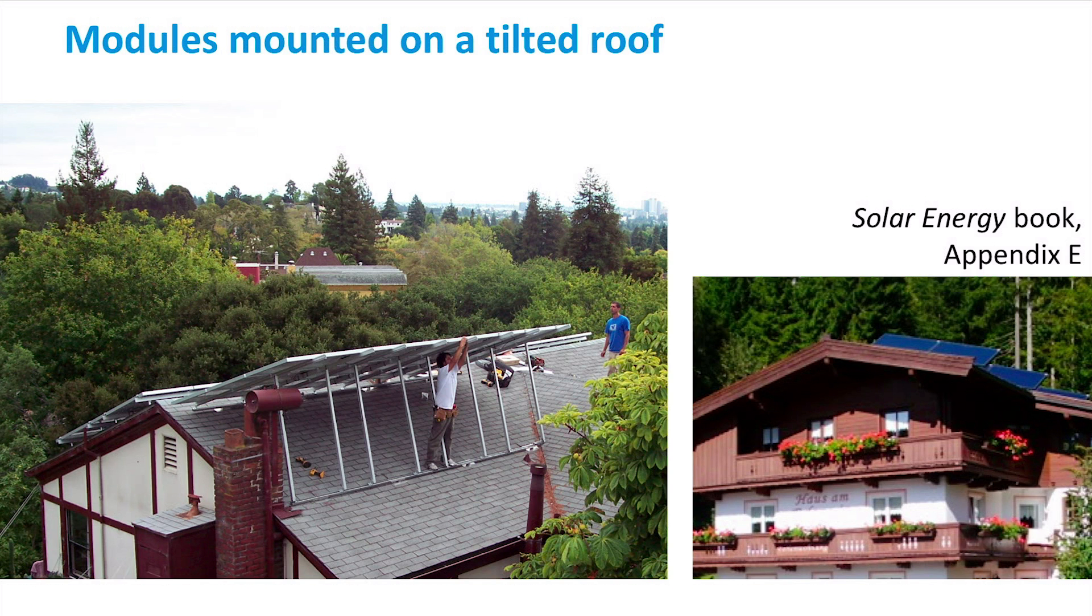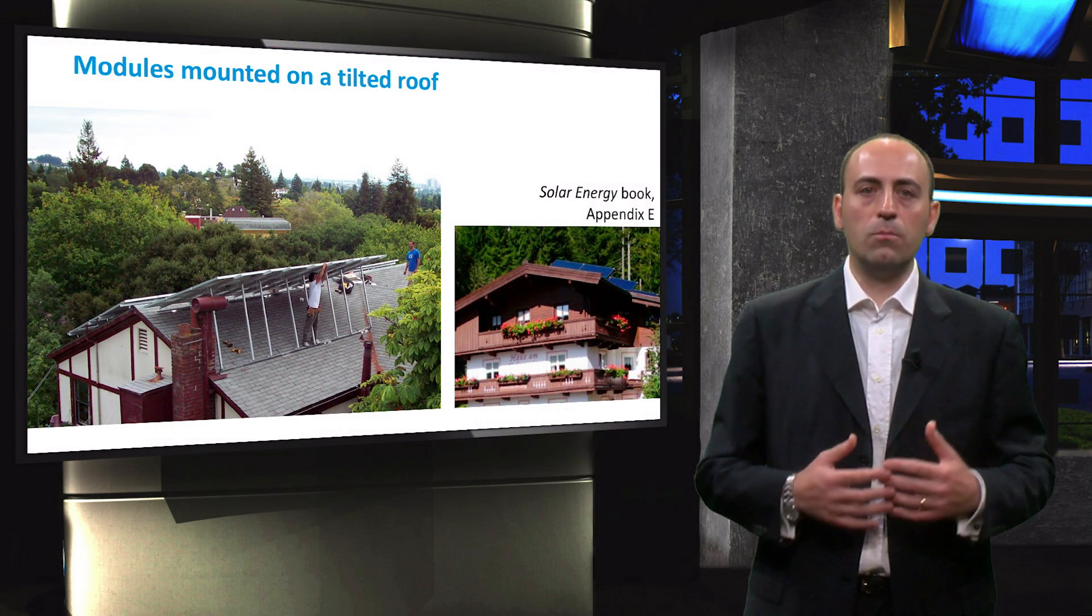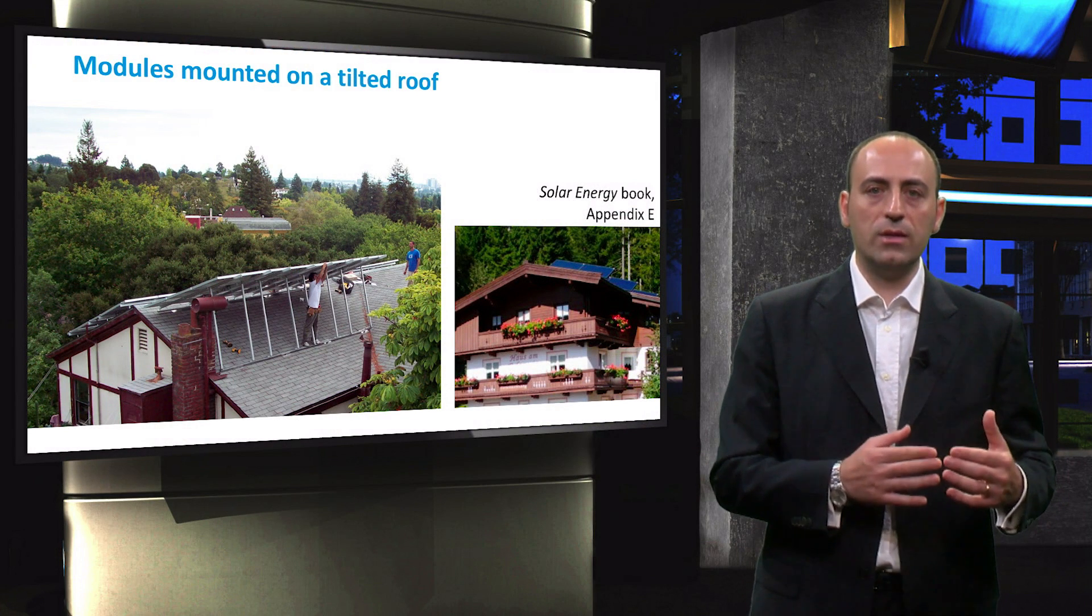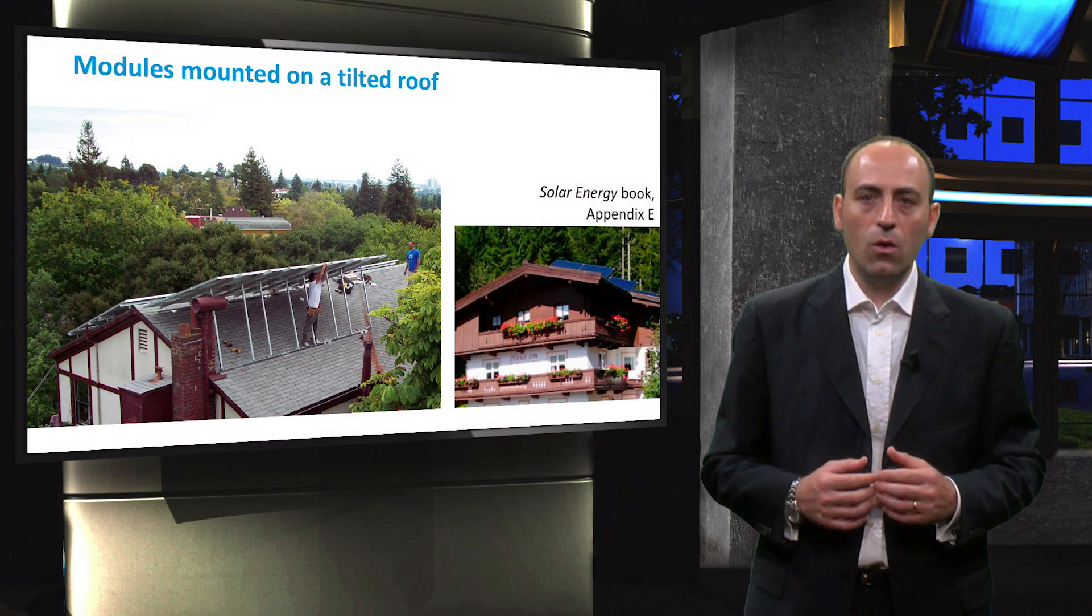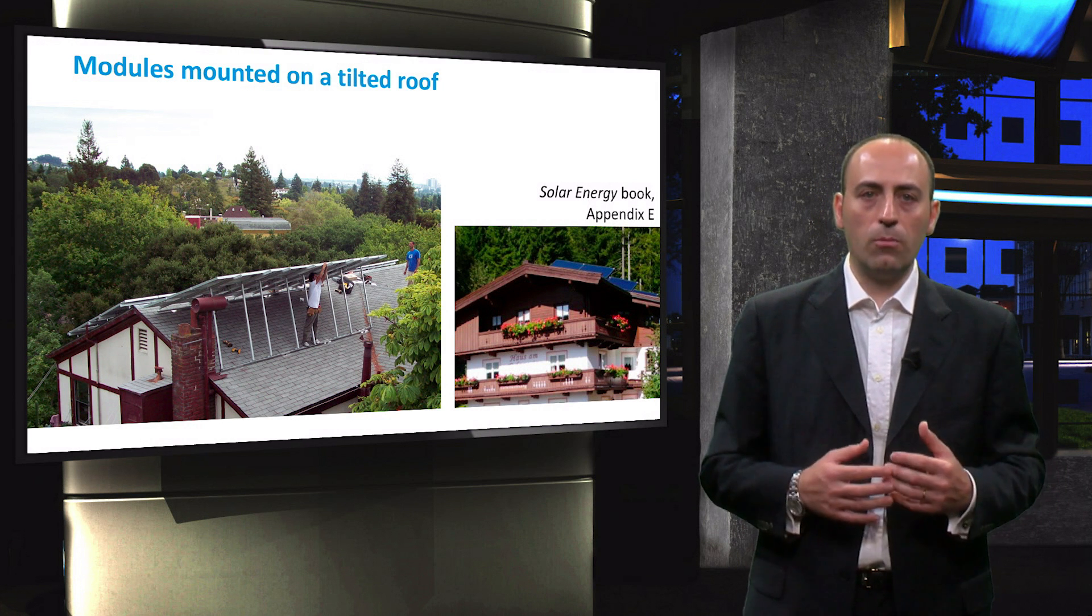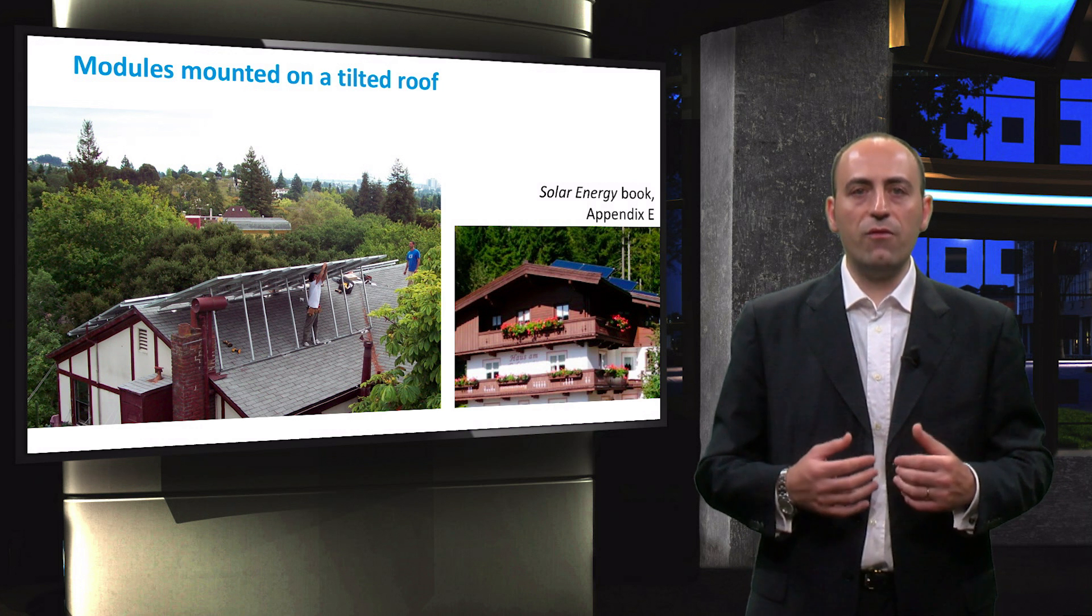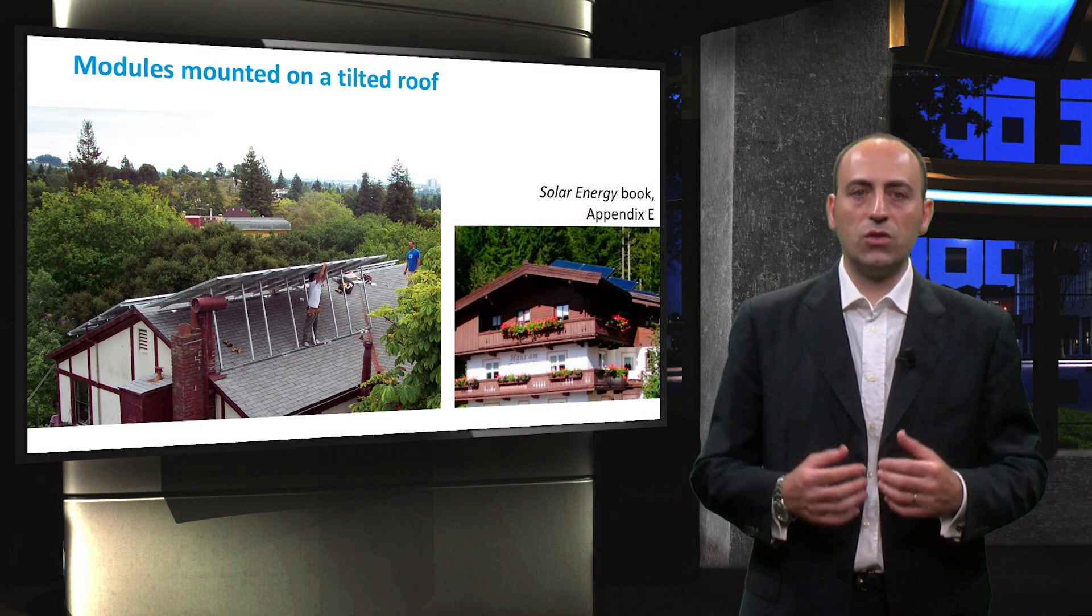We therefore need to calculate the normal of the module in horizontal coordinates in case coordinates with respect to the roof are given. In fact, we have to transform the module normal from the roof coordinate system to the horizontal coordinate system. If you want to see all the steps to obtain the module normal on a tilted roof, you may refer to appendix E of the solar energy book.